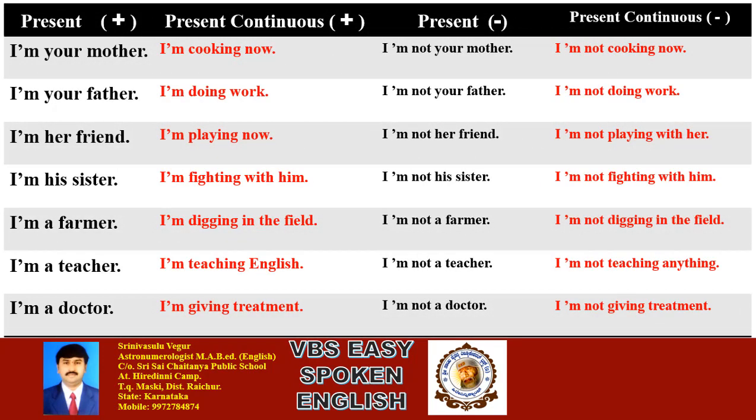Now let's compare all four patterns: present positive, present continuous positive, present negative, and present continuous negative. Observe each sentence: 'I am your mother' — here 'mother' is a noun and there is no main verb, the helping verb is 'I am'. But in present continuous tense 'I am cooking now' — we add ING to the main verb.